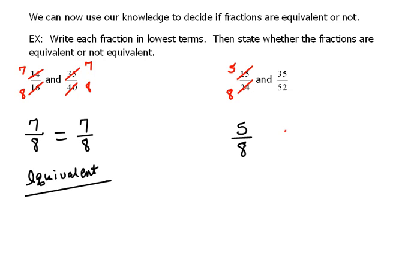Oops, let me change my color here. 35 over 52. There's nothing in common that we can cancel out. So, we're done. Now, looking at 5 eighths and 35 over 52, these are not equivalent. When you put a slash mark through the equal sign, that means not equal to. These are not equal to each other, therefore, they are not equivalent.